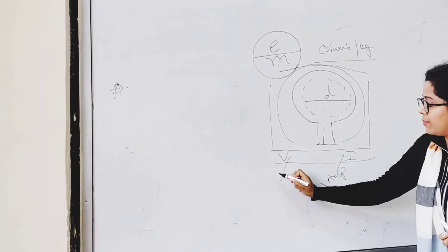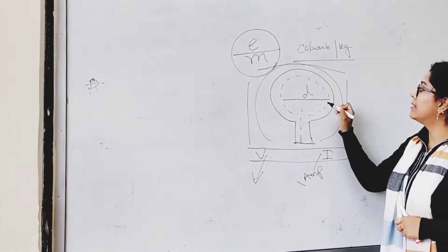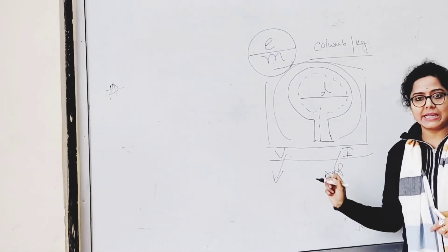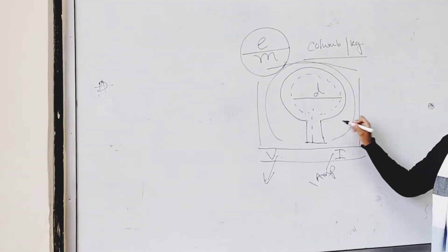Now if we change the voltage, if we decrease the voltage, the diameter of the ring will be decreased. We can see while performing the experiment.